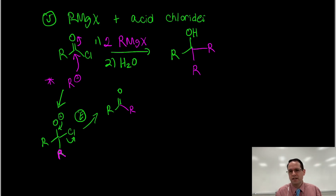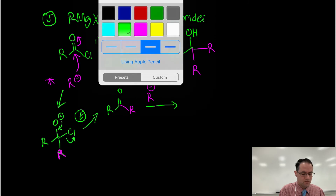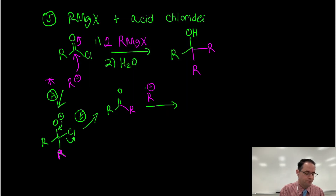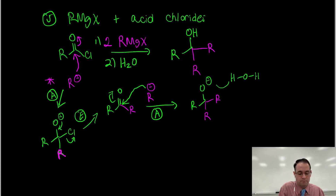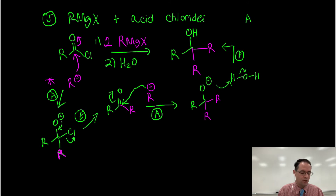We know from prior chapters that ketones react with Grignard reagents. The second Grignard attacks the ketone carbonyl - here there are no leaving groups, so the intermediate just sits there. In step two we add water and protonate the alkoxide to give the final tertiary alcohol product. That's AE then AP, the same as we saw with lithium aluminum hydride.